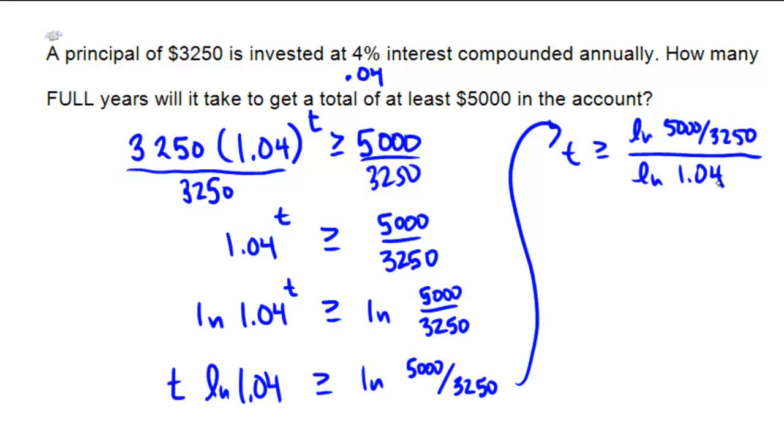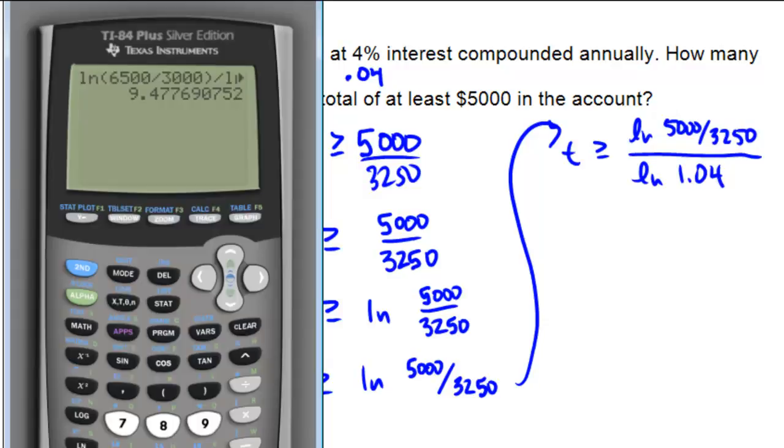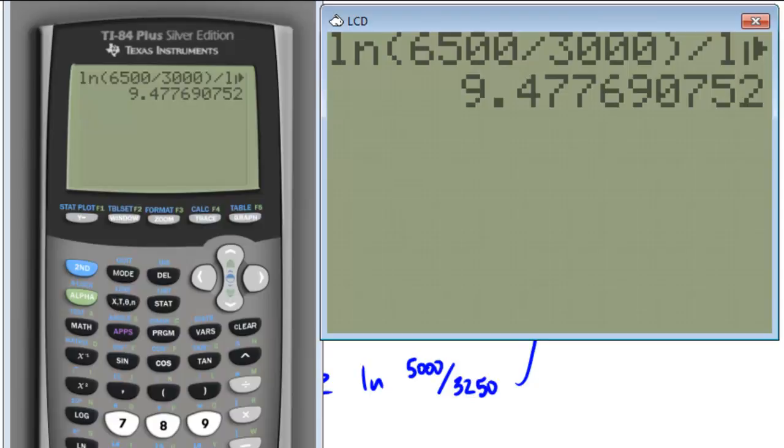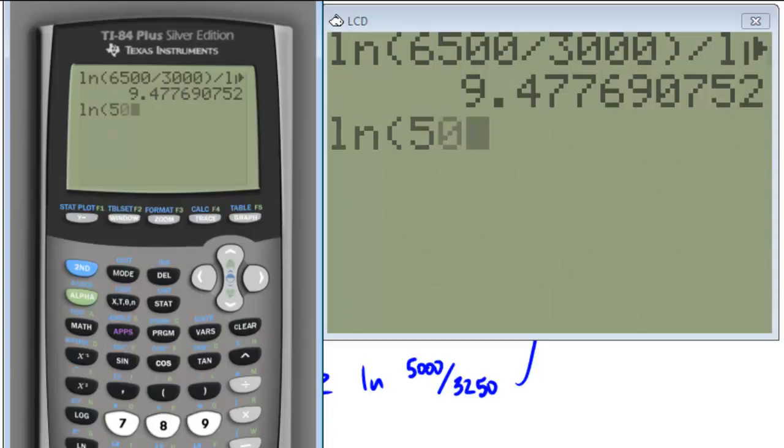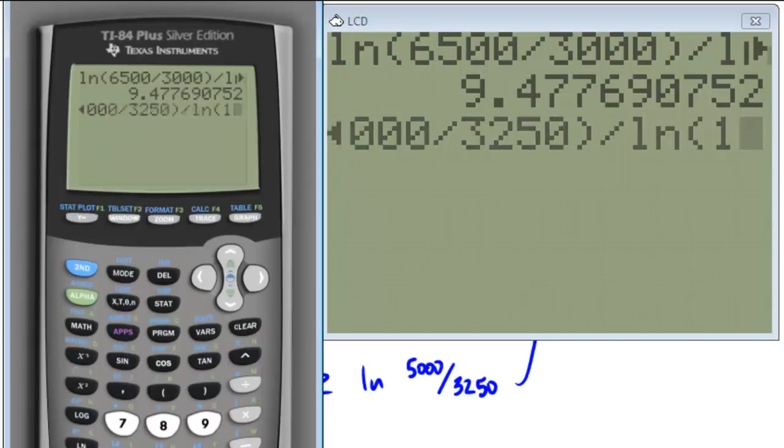So again, let's break out the calculator and see what we're getting here. So in the calculator, we're going to calculate ln of 5,000 divided by 3,250. And then we're going to divide that by the ln of 1.04.